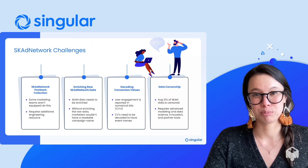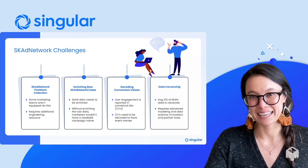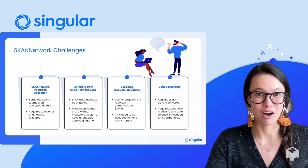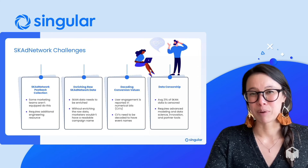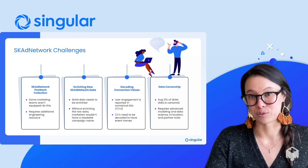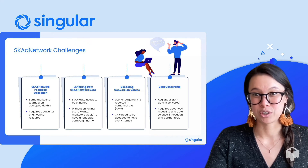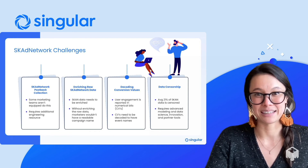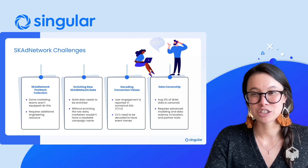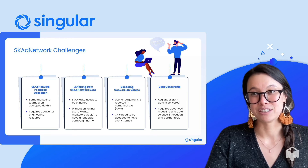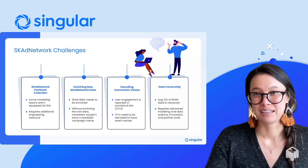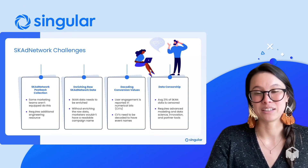Let's dive into some of those top challenges. First, marketers are now responsible for collecting raw SKAdNetwork postbacks. Second, due to limited granularities, raw SKAdNetwork postbacks need to be enriched with other datasets like campaign and cost data from networks — without data enrichment, marketers wouldn't have a readable campaign name. Third, post-install data is only represented on raw SKAdNetwork postbacks by conversion values, which are numerical bits that need to be translated and decoded into actual event names. And lastly, data censorship — probably the most significant challenge. According to Singular's data, on average, 21% of SKAdNetwork performance data is unreported by Apple due to data privacy threshold censorship.